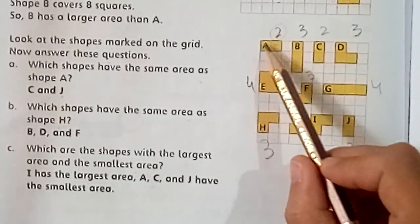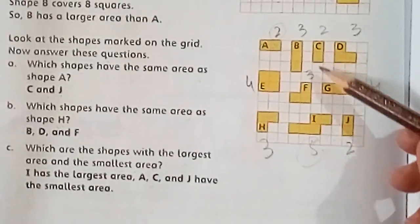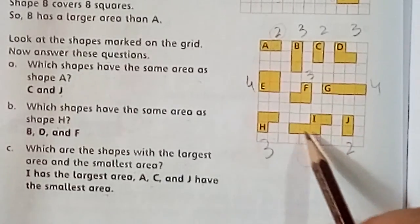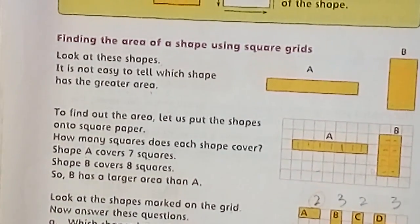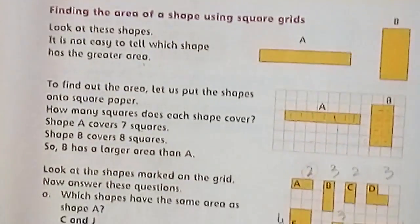Next: which are the shapes with the largest area and the smallest area? You can see that A has two squares, C also has two squares, and J also — so A, C, and J have the smallest area. For shape I: one, two, three, four, five — I has five squares, so I has the greatest or largest area.